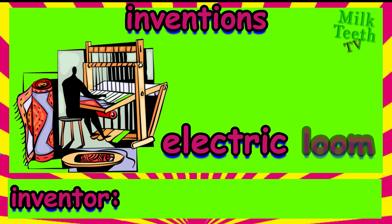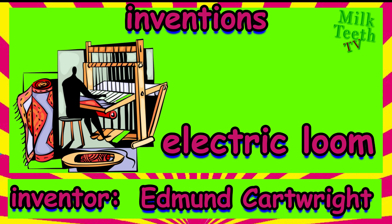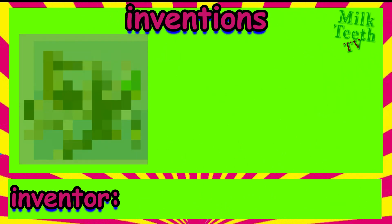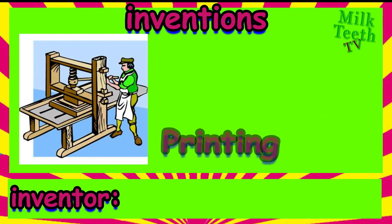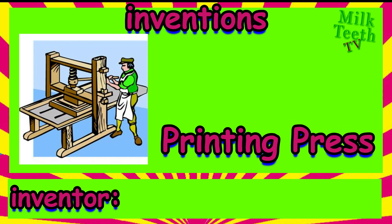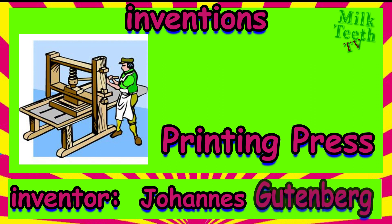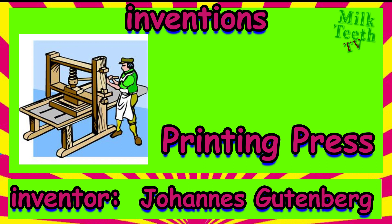This is an electric loom. It is used for the weaving of fabrics — that is, the clothes that you wear. It was invented by Edmund Cartwright. Have you ever wondered how your books are printed? They are printed on a printing press, which was invented by Johannes Gutenberg.